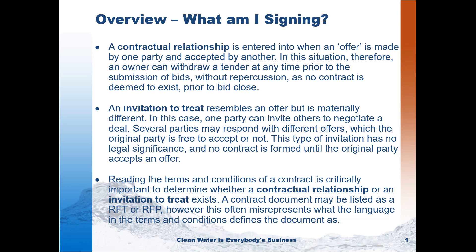When the owner turns around and chooses one of the bids, that bid then becomes the offer for Contract B — the construction contract itself — and the owner's selection of a bid becomes the acceptance, which creates Contract B. This has been the traditional contract model for decades.